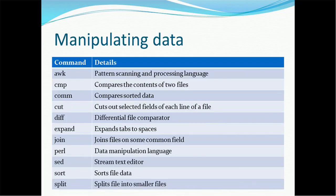If you want to manipulate data, there are some commands which can be used during UNIX programming. The very first command is AWK — this is a very powerful command. With AWK you can manipulate data in a better and proper way; it is actually used for pattern scanning and processing. The other command is CMP — it compares the content of two files.